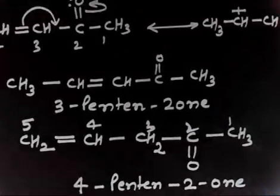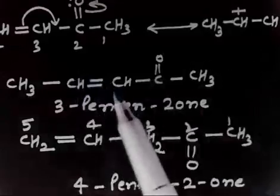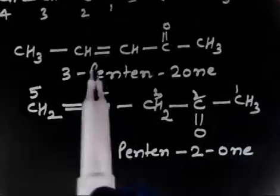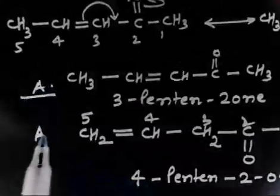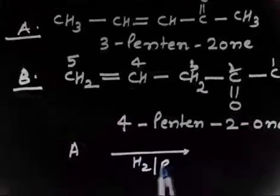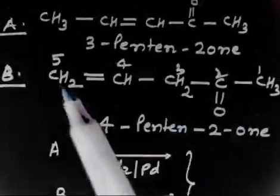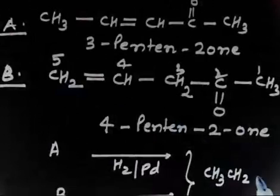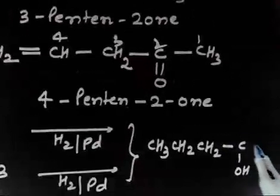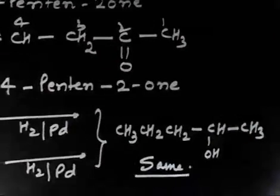Now, which will have a higher heat of hydrogenation? If you hydrogenate both compounds, the C=C double bond and the C=O bond both get hydrogenated. In both cases — molecule A (3-pentine-2-one) and molecule B (4-pentine-2-one) — hydrogenation with H2/Pd gives the same final product: CH3CH2CH2CH(OH)CH3.